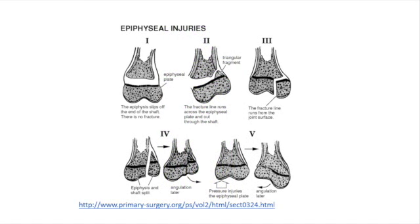Here we're looking at the five different types of epiphyseal injuries. In the first type, the epiphysis slips off the end of the shaft. The prognosis for this kind of injury is usually pretty good. These injuries occur at birth or in early childhood.